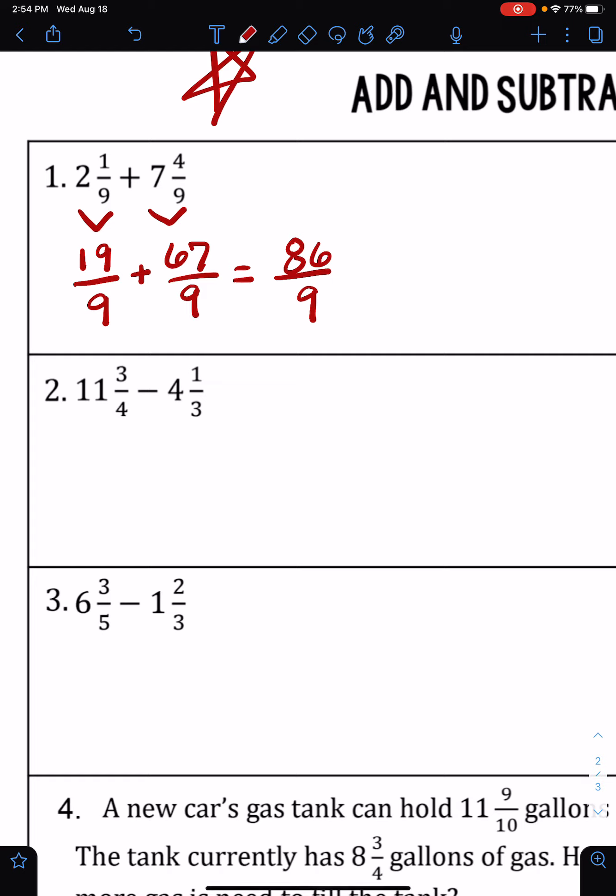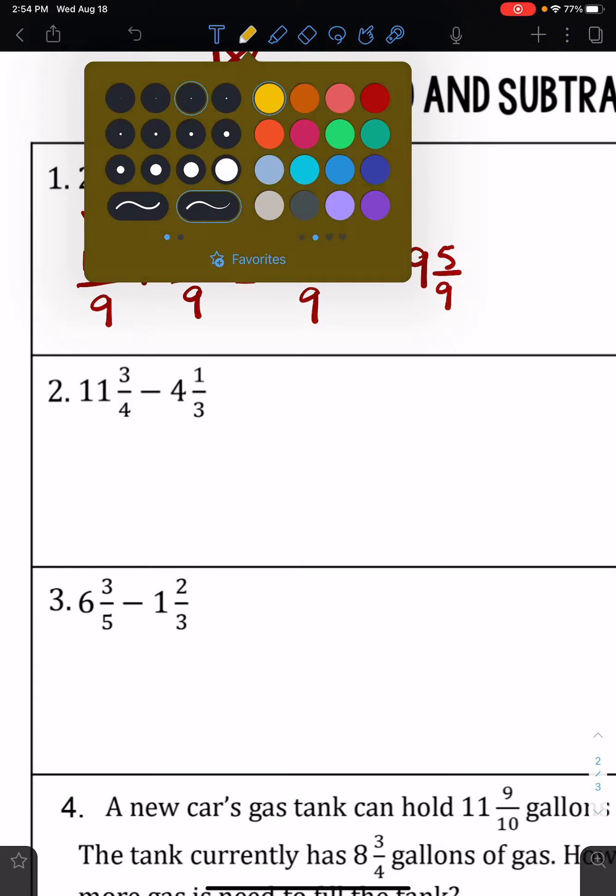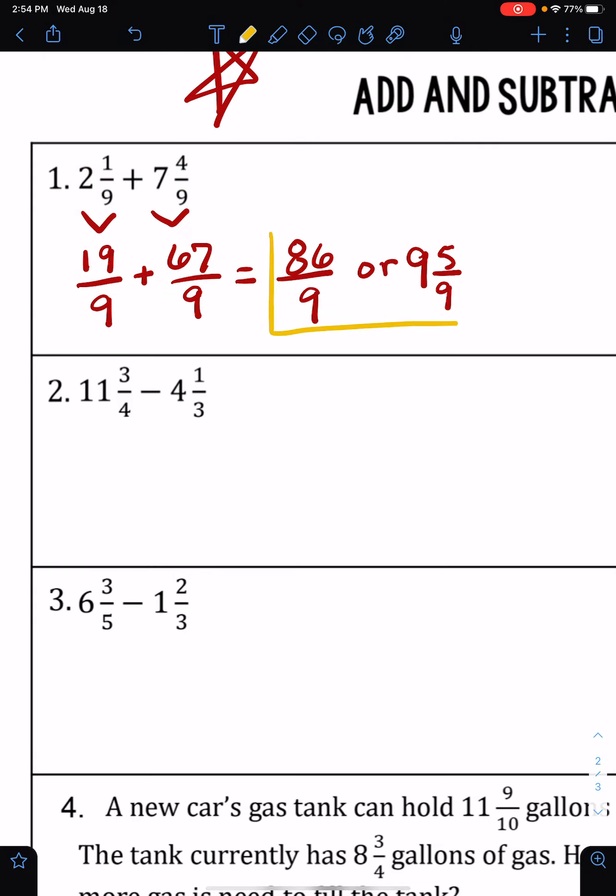This cannot be simplified any further, but if you want to change this to a mixed number answer you can. Let's see, 9 times 9 is 81, so we'd have 5 left over. Either one of these answers I would accept as correct. I prefer the improper fraction on the left, but the mixed number would not be marked wrong.